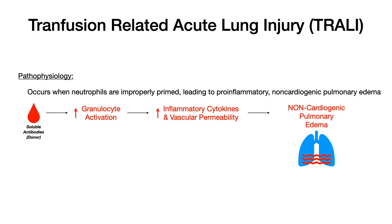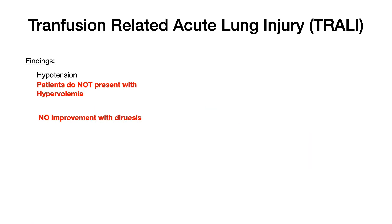To summarize: TACO is inherently a cardiogenic edema in patients who are more likely to have hypervolemia. TRALI is a non-cardiogenic pulmonary edema that occurs because of soluble antibodies in the donor blood product. Symptoms-wise in TRALI, you would see hypotension, and patients would not present with signs and symptoms of hypervolemia. So you can differentiate TRALI versus TACO pretty easily: in TACO you see high blood pressure and hypervolemia; in TRALI you see low blood pressure and no signs of hypervolemia.